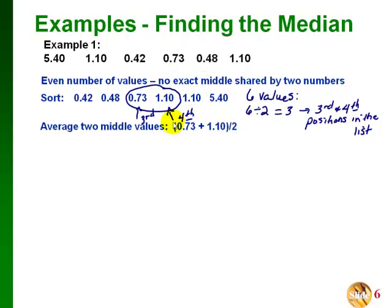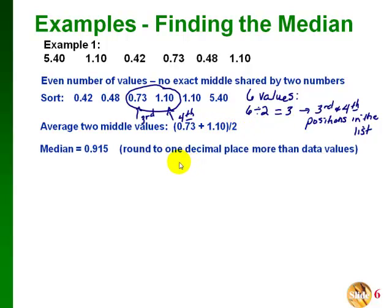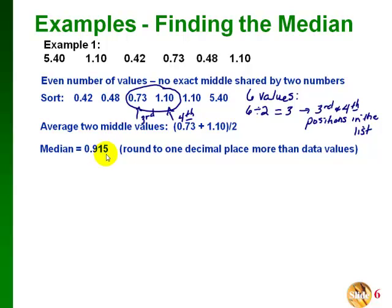We take those two values and average them — adding them together and dividing by two — and we get 0.915. The rule of thumb for rounding is to carry statistics to one more decimal place than what the data values are. Since these data values go out to the hundredths place, we round to one more place past that — the thousandths place. So we round this to three decimal places, giving us 0.915.